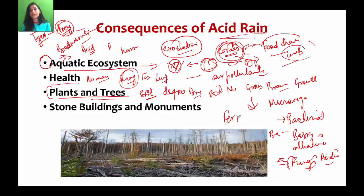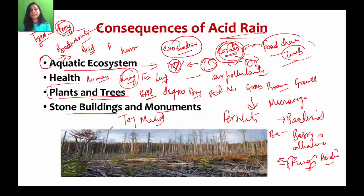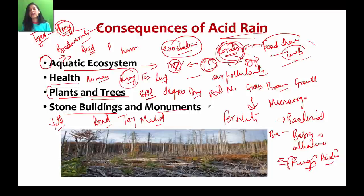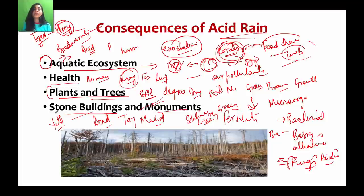Effect on stone buildings and monuments: in India, the Taj Mahal — which is made of calcium carbonate marble — has turned yellow due to acid rain reactions. Environmentalists warned about this, though the government initially resisted. Similarly, the Statue of Liberty has turned green. These are two famous examples of how acid rain degrades old buildings and stone monuments.